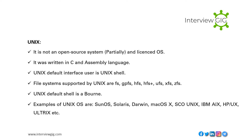Unix: it is not fully open source — it is partially open and licensed. It was written in C and assembly language. The default Unix user interface is the Unix shell. File systems supported by Unix are FS, GPFS, HFS, HFS+, UFS, XFS, ZFS. The default Unix shell is Bourne shell. Examples of Unix OS are SunOS, Solaris, Darwin, Mac OS X, SCO Unix, IBM AIX, HP-UX, Ultrix, etc.